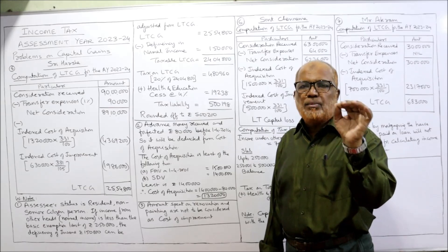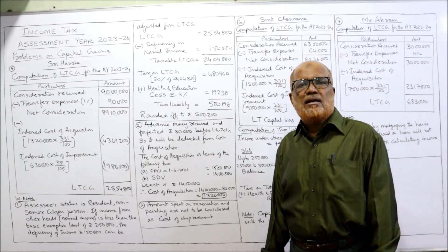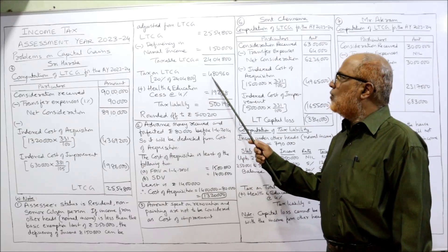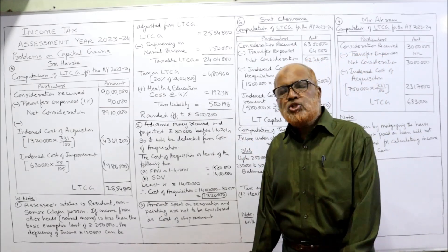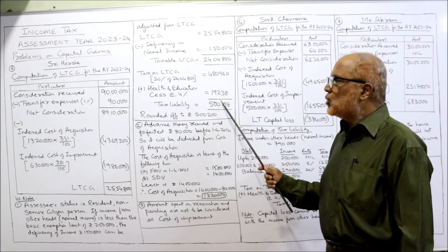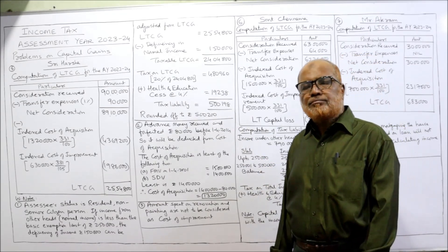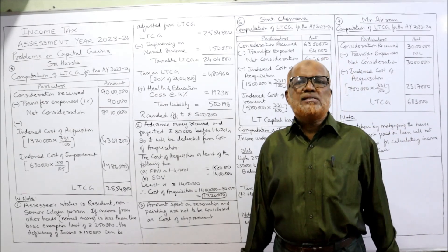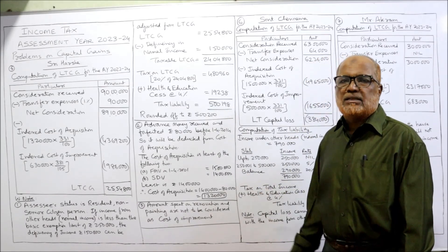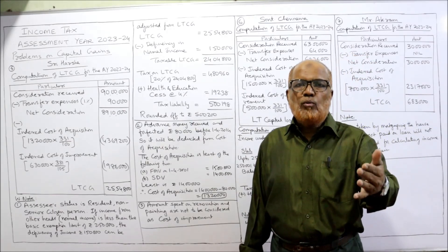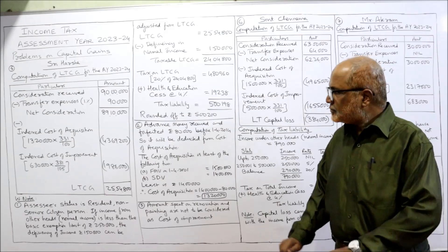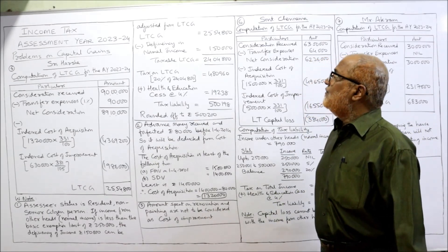On this taxable LTCG, tax at the rate of 20% will be charged. 20% on Rs. 24,04,800 = Rs. 4,80,960. On this amount, health and education cess at 4% = Rs. 19,238. Total comes to Rs. 5,00,198. Income tax should be rounded off to the nearest 10 — the last digit is 8, so we add Rs. 2 more to make it Rs. 200. Therefore, Rs. 5,00,200 is the tax liability. That's all — this is the end of the fifth problem.